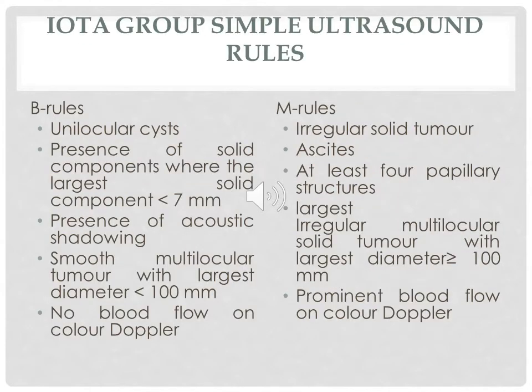Another classification is the IOTA group simple ultrasound rules, using B-rules for benign and M-rules for malignant cysts. Benign features (B-rules) include: unilocular cyst, presence of solid component where the largest solid component is less than 7 mm, acoustic shadowing, small multilocular tumor with largest diameter less than 10 cm, and no blood flow on color Doppler. Malignant features (M-rules) include: irregular solid tumor, ascites, at least four papillary projections, a large irregular multilocular solid tumor with diameter more than 10 cm, and prominent blood flow on color Doppler.